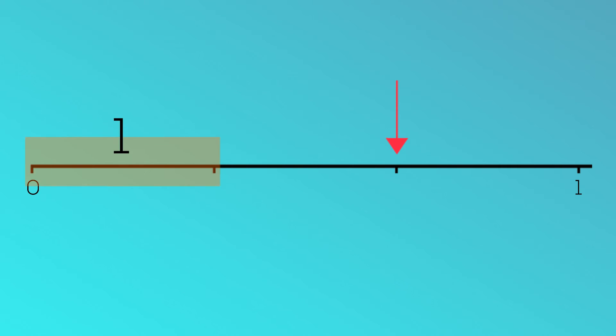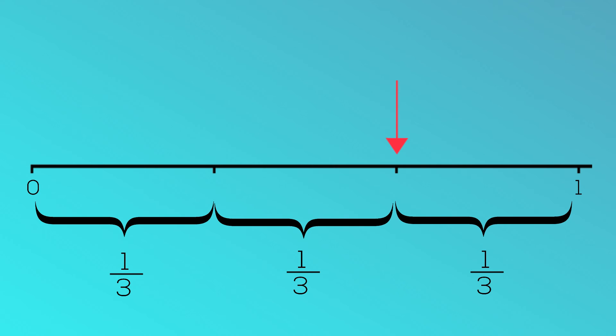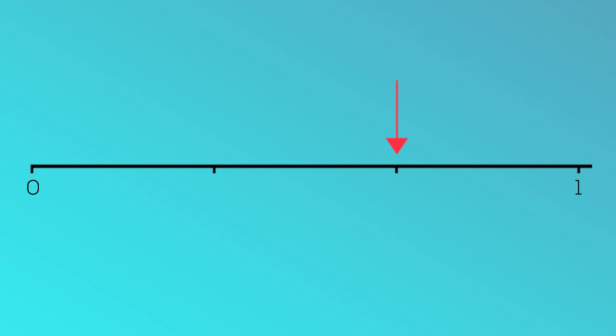One whole has been divided equally into three equal parts, so each of these parts represents one-third. One-third, two-thirds. This marker is pointing to two-thirds.